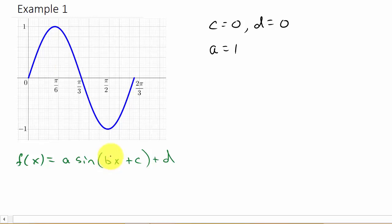The first thing we need to do is find the period. Remember that's two pi over b. That'll give us our value of b if we can figure out what the period is.